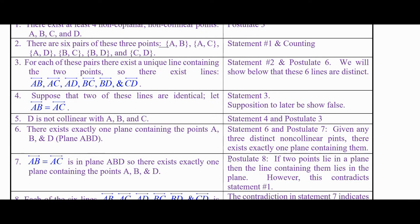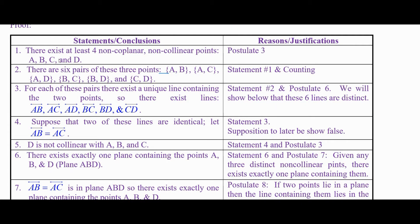D is not collinear with A, B, and C. We know that's true because of the hypothesis that these four points are non-collinear and non-coplanar. So there's no line containing all four and no plane containing all four. There may possibly be more than four points on a line or in a plane — certainly true in Euclidean geometry, but not necessarily in a finite geometry. What we do know is that for these four points, no single plane contains them all and no single line contains them all. So D is not collinear with A, B, and C.